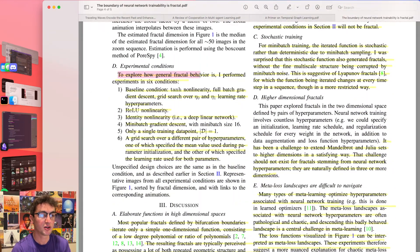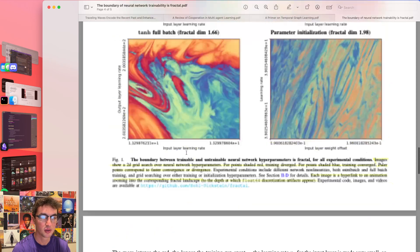To explore how general fractal behavior is, I perform experiments on six conditions. So the baseline use the tangent or tanh non-linearity, full batch gradient descent, search over eta0 and eta1, aka the learning rates of the input versus output layer. This is all two layer feed-forward networks, just very, very simple. Tried out a relu, tried out an identity non-linearity, aka a deep linear network, tried out mini-batch, tried out only a single training data points, and tried out a grid search over different parameters.